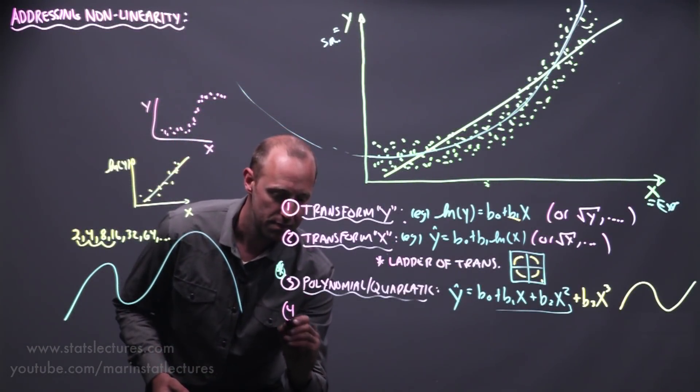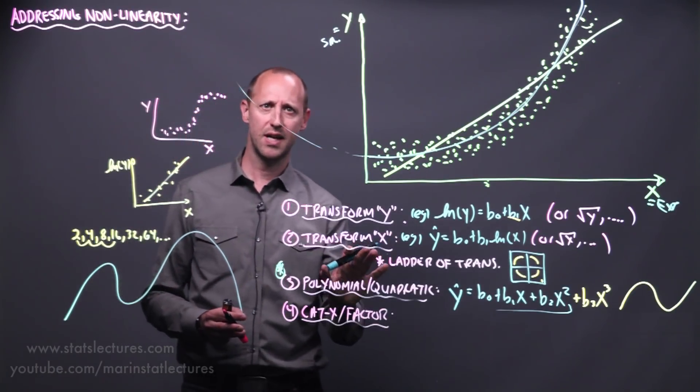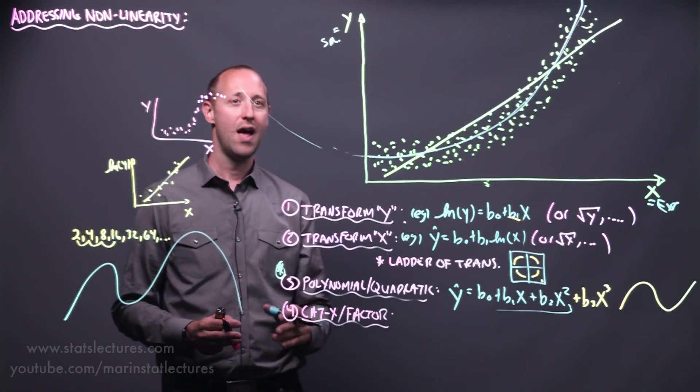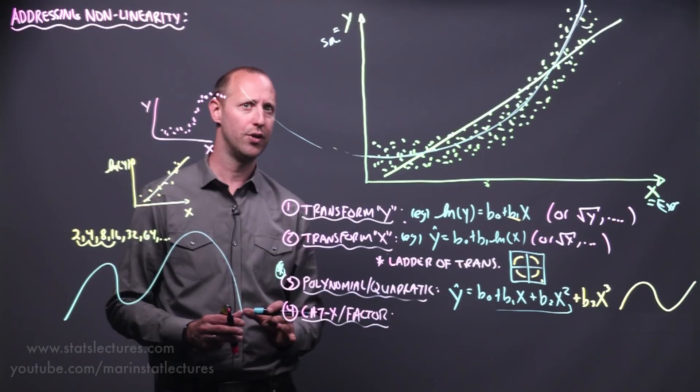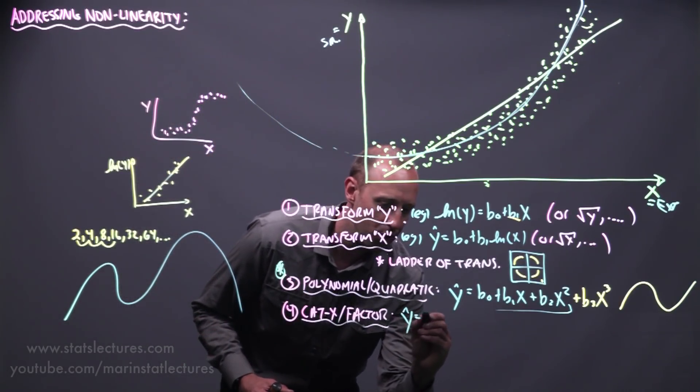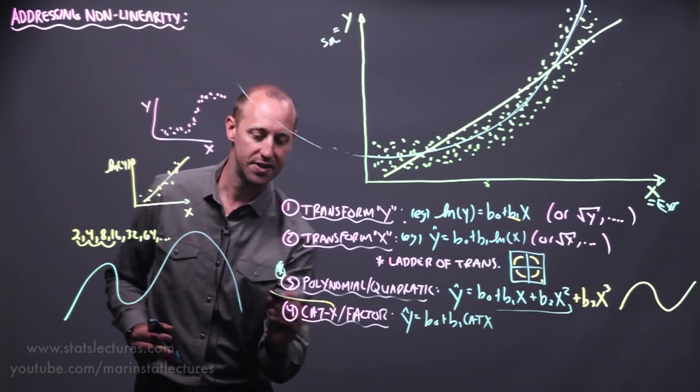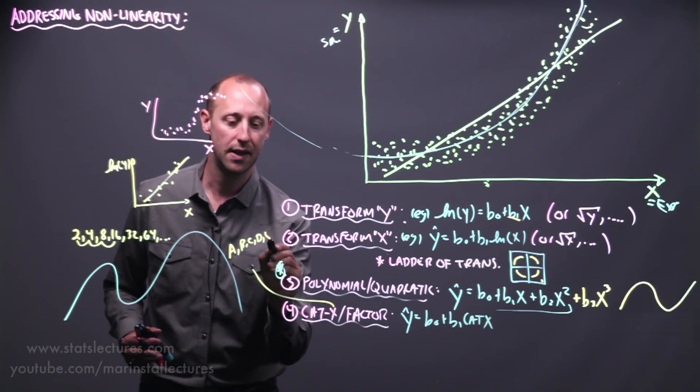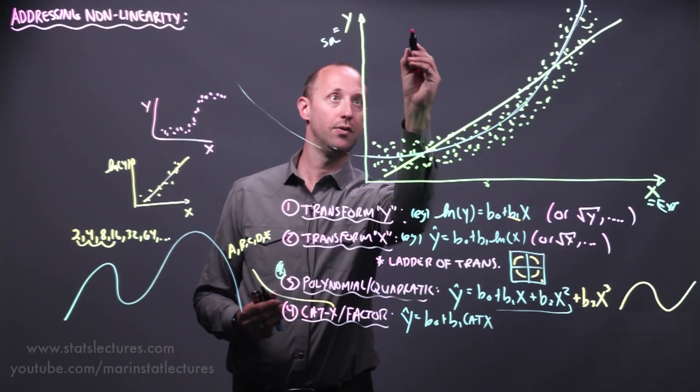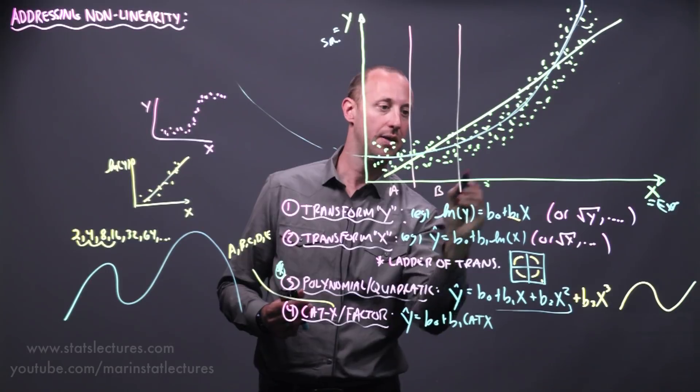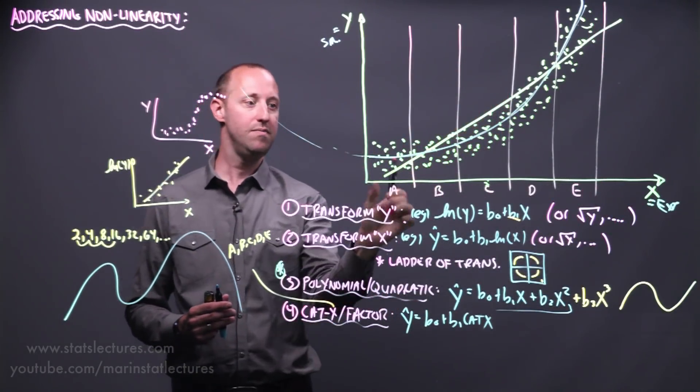A fourth option we can consider is categorizing x, or making it a factor. And it's worth mentioning here that I'm going to introduce this idea here, although it really does require a bit of understanding of how do factors or categorical variables get included in regression models. So you might need to explore a bit on the idea of how factors are included or what is a dummy or an indicator variable. But the idea here is that we're going to model y as a function of the categorized x. And let's just say suppose that the way we categorize x is to create categories a, b, c, d, and e. So what we're doing here is let's suppose we break this up into here's category a, b, c, d, and e. So taking this numeric variable and breaking up into categories.